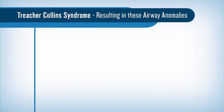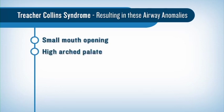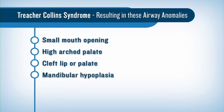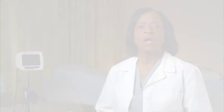Finally, in Treacher-Collins syndrome, the most important airway considerations include small mouth opening, high arch palate, cleft lip or palate, severe mandibular hypoplasia, and narrow airway due to pharyngeal hypoplasia. With most of these syndromes, the difficulty with laryngoscopy improves as the pediatric patient gets older. However, it is quite the opposite when managing the airway of a patient with Treacher-Collins syndrome.